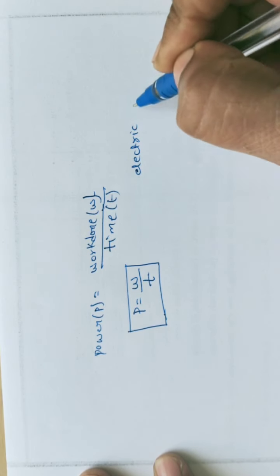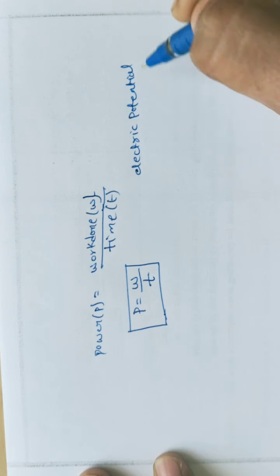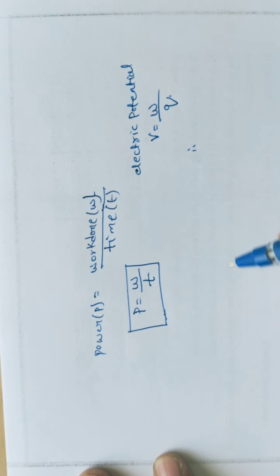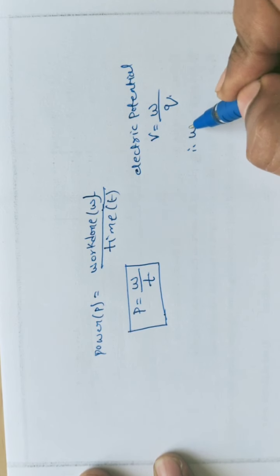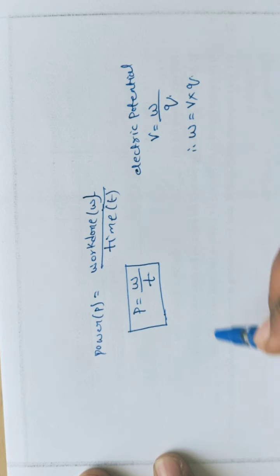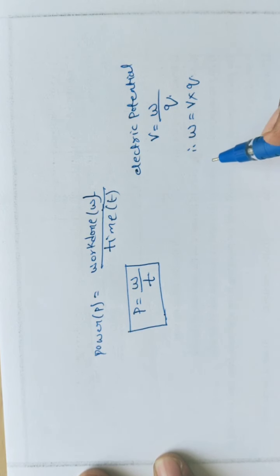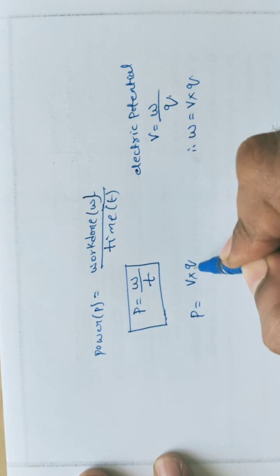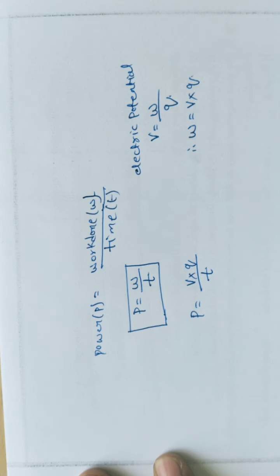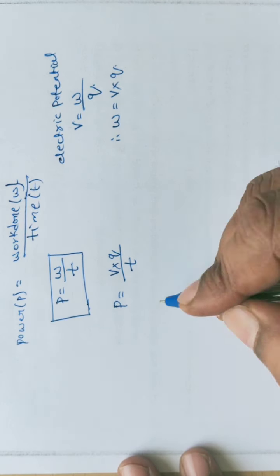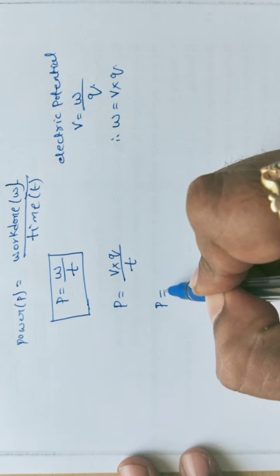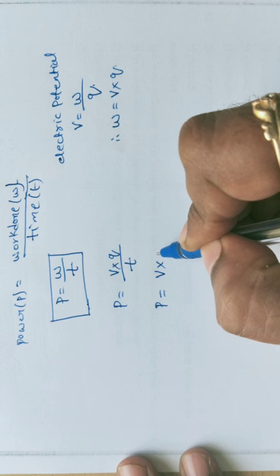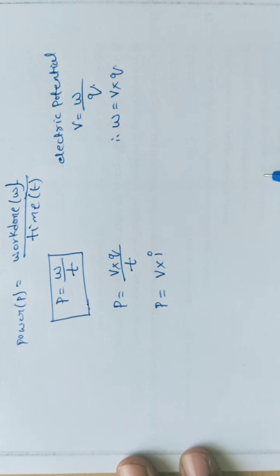From electric potential, we know V is equal to W by Q. Therefore, work done W is equal to V into Q. Substituting this in the power formula, power equals V into Q divided by T. Since Q by T is electric current I, we get the fundamental formula P equals V into I.